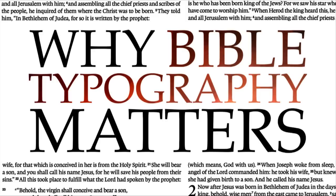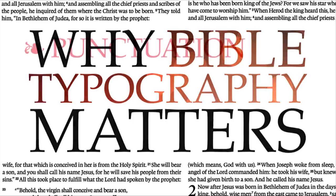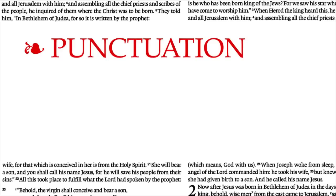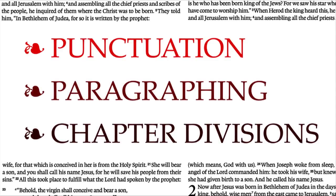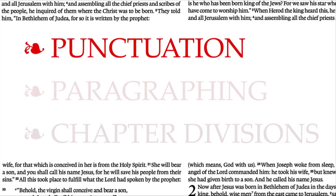Typographical decisions happen at several levels, and I want to talk about three of them — that doesn't exhaust the topic, but the structure of my talk is simple. I want to give two scriptural examples of each level: two Bible examples of how punctuation means, two examples of how paragraphing means, and two examples of how chapter and even book-level typographical divisions carry meaning to Bible readers. First, punctuation.